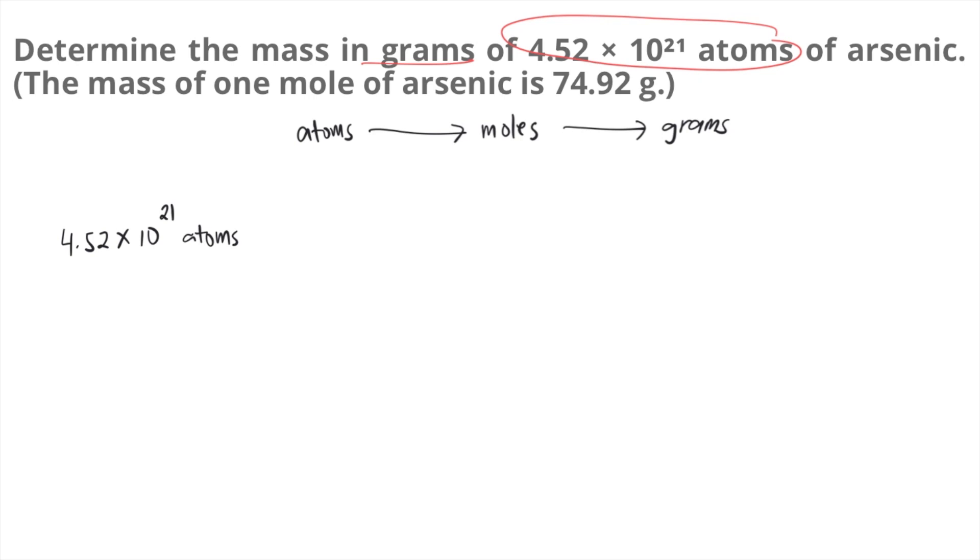We will use Avogadro's number. If you can recall, 1 mole of a substance is 6.022 times 10 to the 23 particles. In this case, we're talking about element arsenic. So 1 mole of arsenic is 6.022 times 10 to the 23 atoms of arsenic.